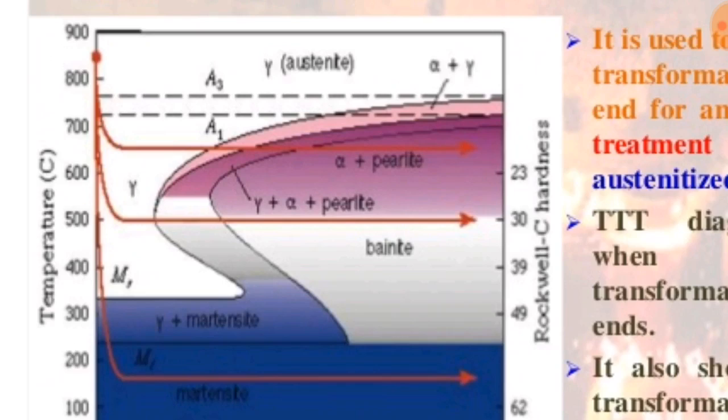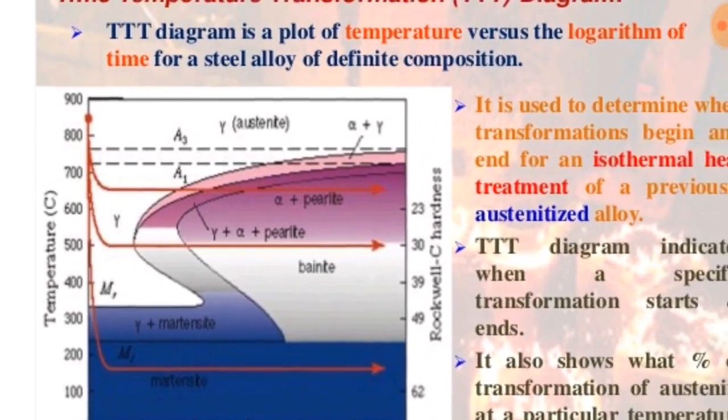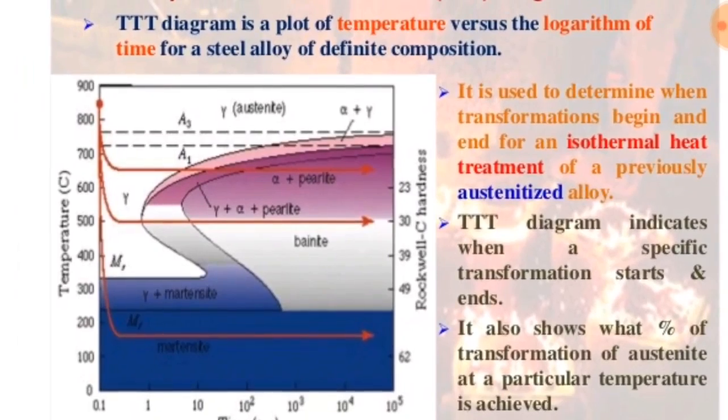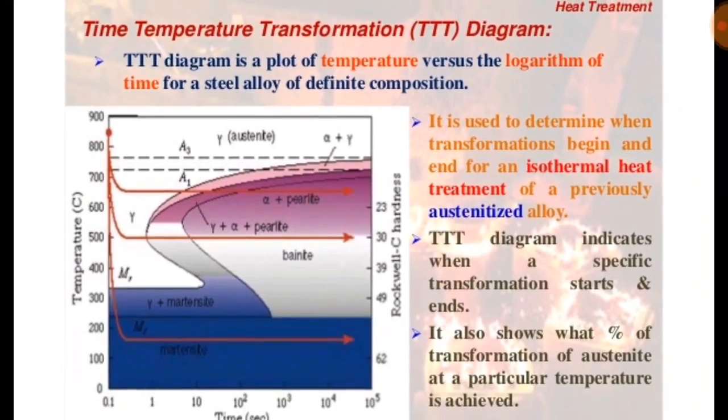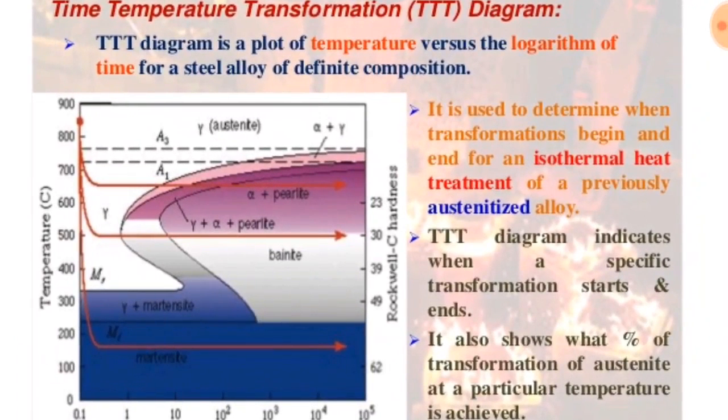This diagram is for a steel alloy of definite composition. It is used to determine when transformations begin and end for an isothermal heat treatment of a previously austenitized alloy.